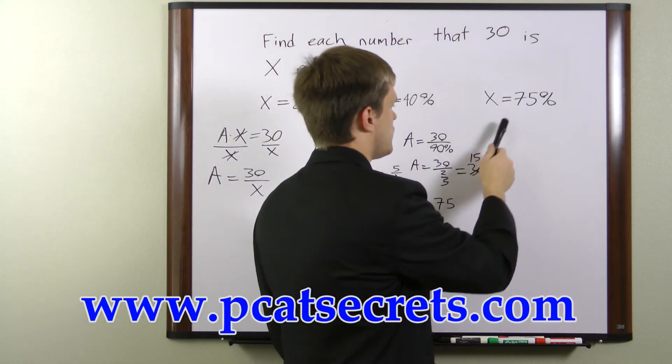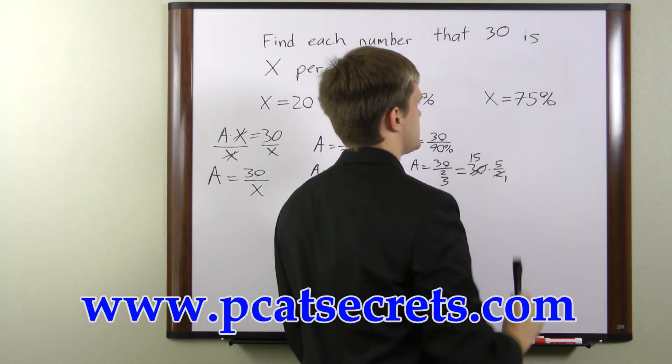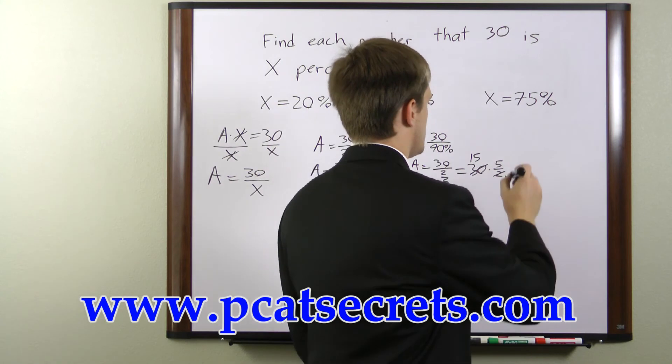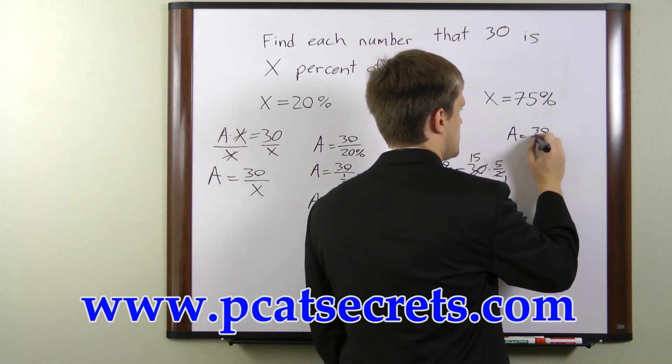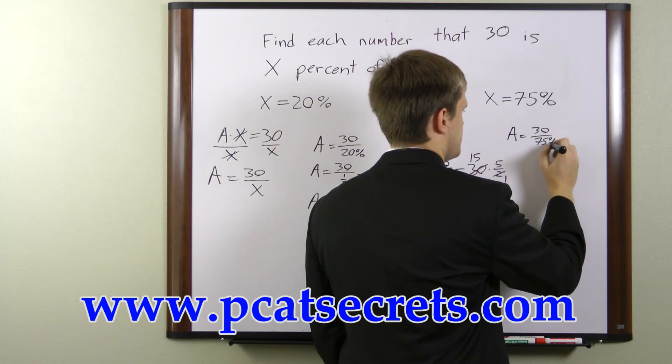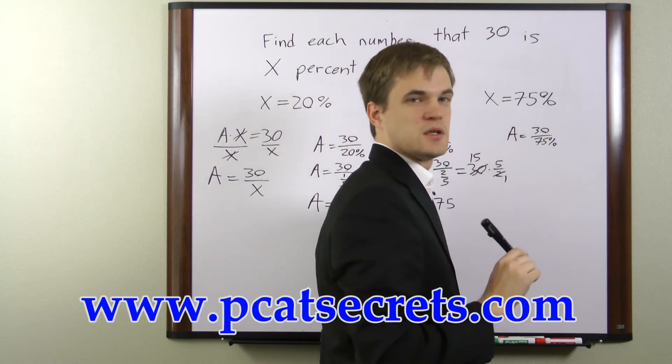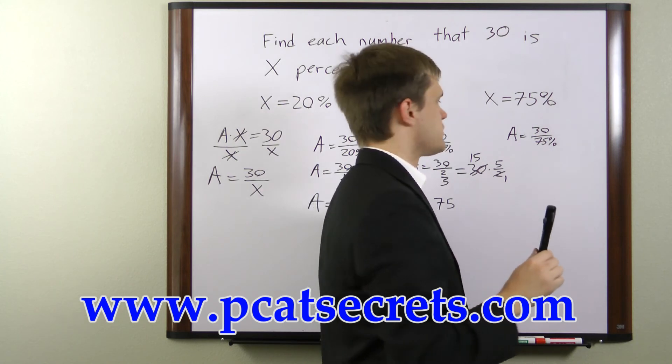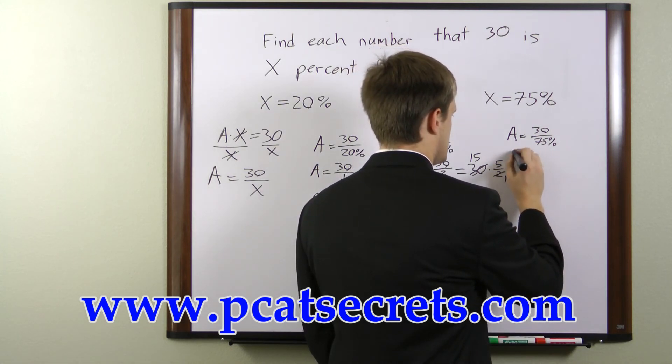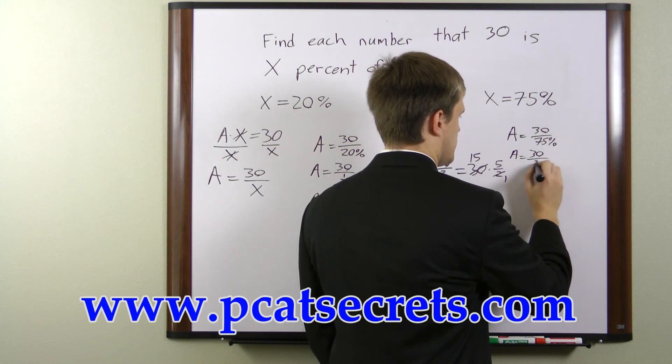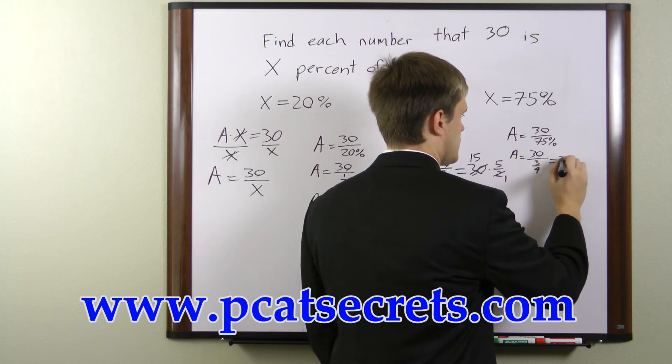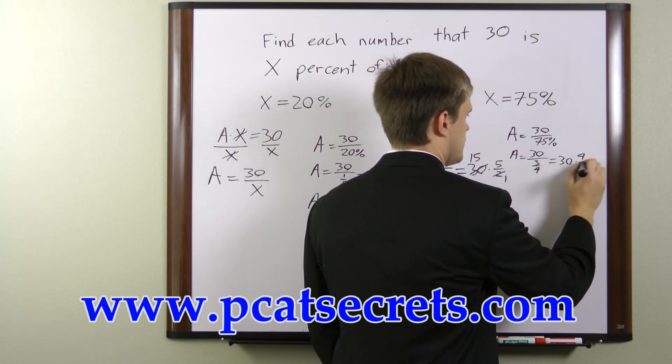In the final example, we have 75 percent. So we can write that a equals 30 over 75 percent. The fractional equivalent of 75 percent is 3 over 4.